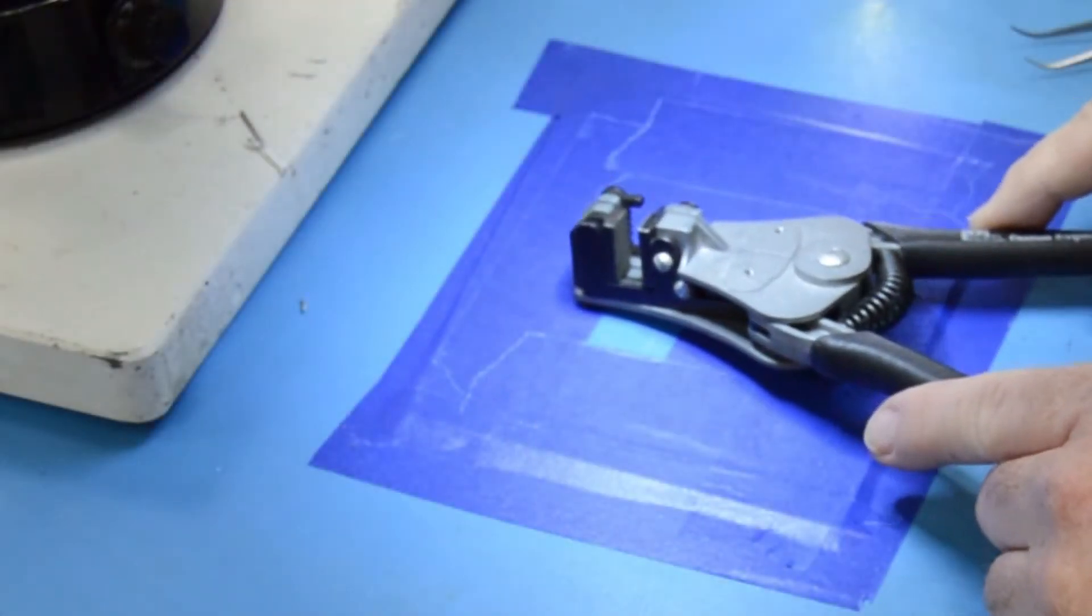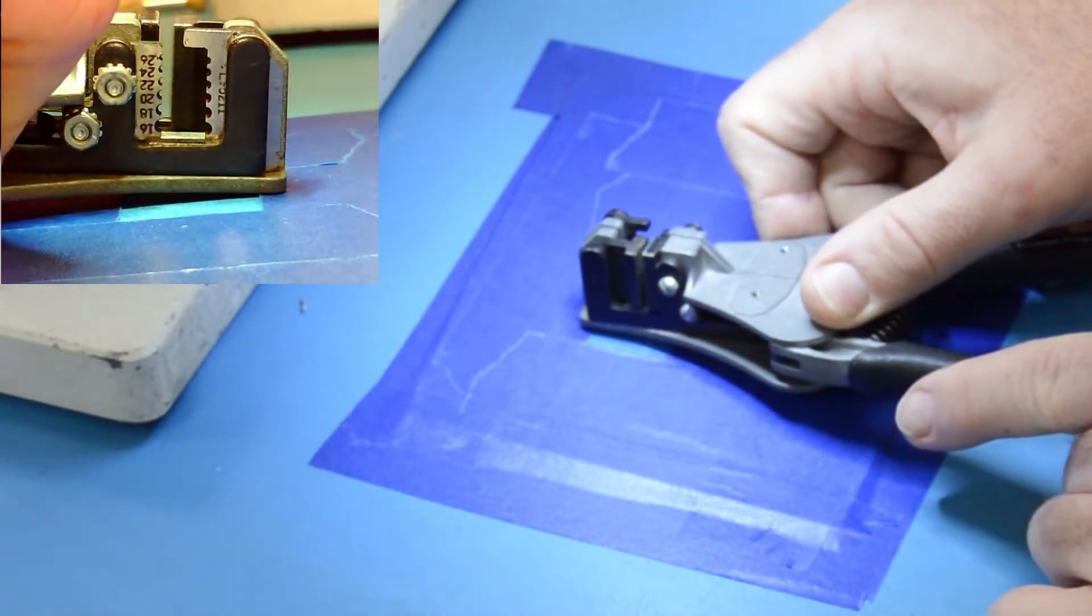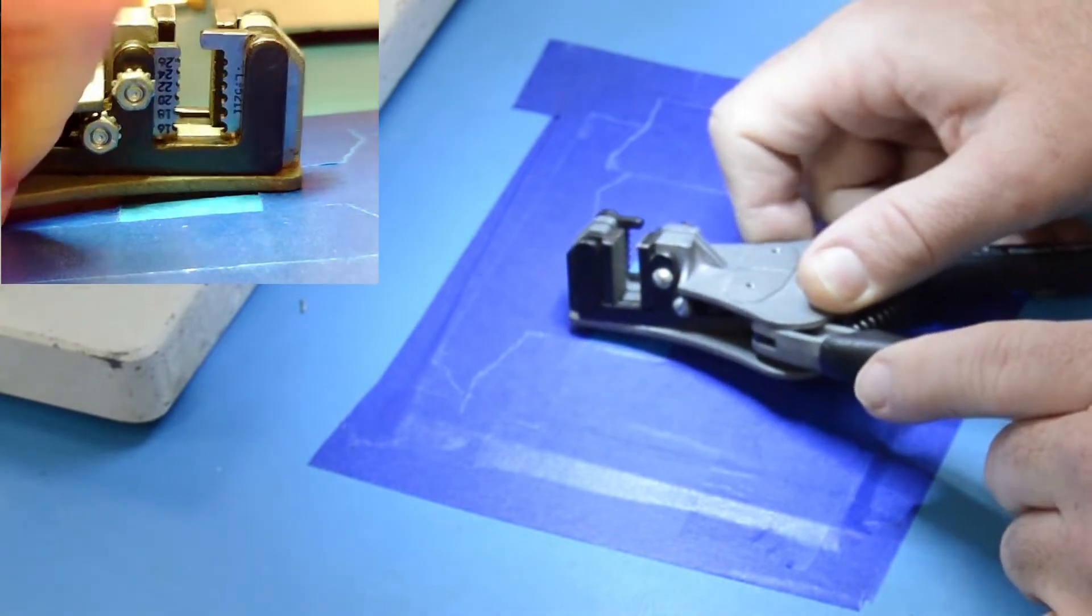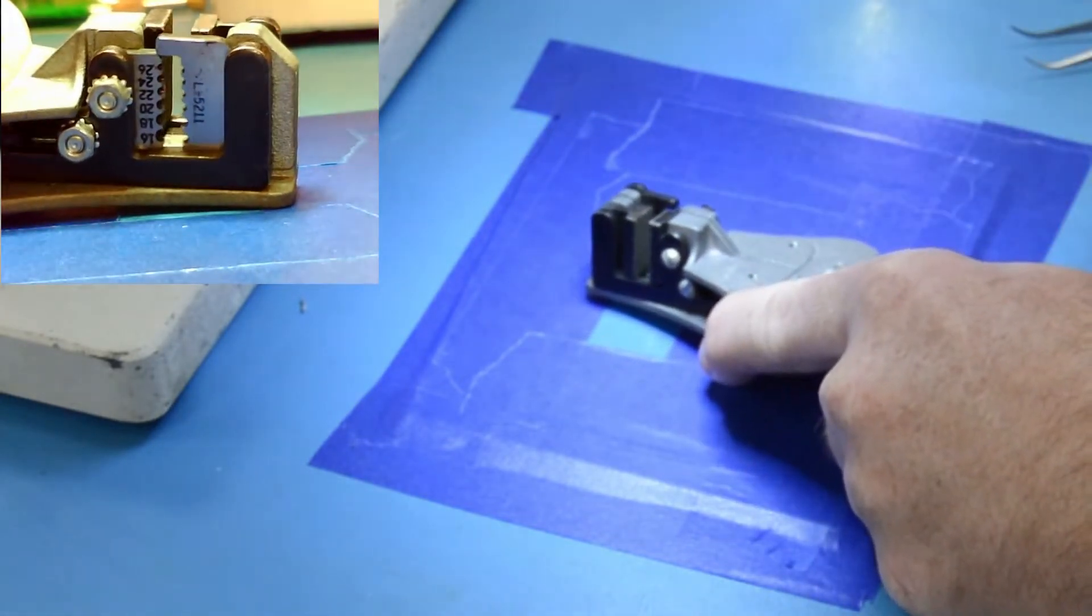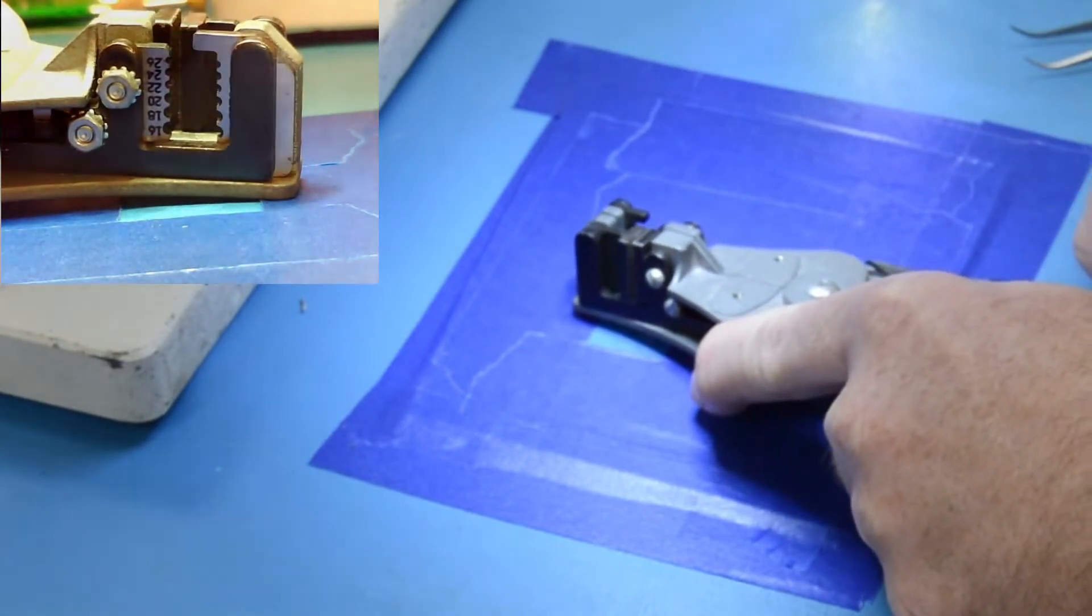The compound-style wire stripper incorporates an anvil to hold the wire in position and an insulation severing blade to cut the insulation. Note that the blade has markings and sized holes for various wire gauges.